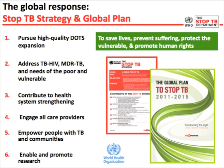The Stop TB strategy was launched by WHO in 2006, building on the DOTS strategy from the 1990s, and encapsulated in the Global Plan to Stop TB. Its six components are: (1) having the basics of TB control — the DOTS strategy — in place; (2) addressing TB-HIV, MDR-TB, and the needs of poor and marginalized people; (3) working within the health system context; (4) engaging all care providers including private ones; (5) working with and empowering communities; and (6) enabling research.